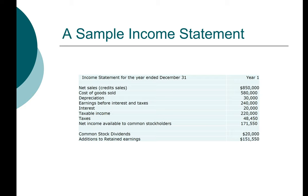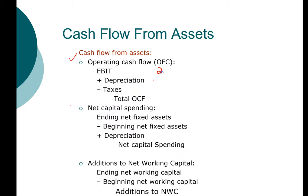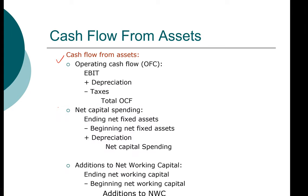Here is our sample income statement. We have earnings before interest and tax of $240,000, depreciation of $30,000, and taxes of $48,450. We're going to put down this information from the income statement: EBIT of $240,000, add $30,000 in depreciation, and subtract taxes of $48,450. That gives us our total operating cash flow of $221,550.